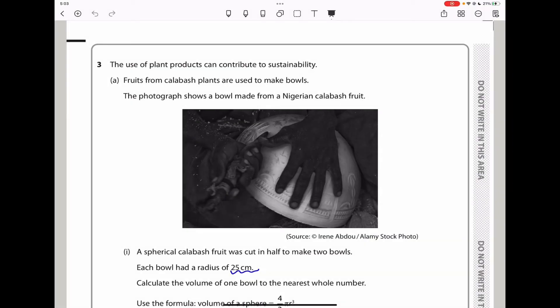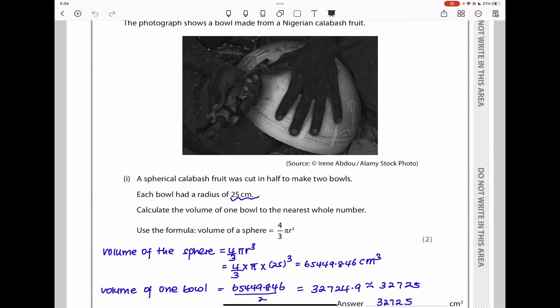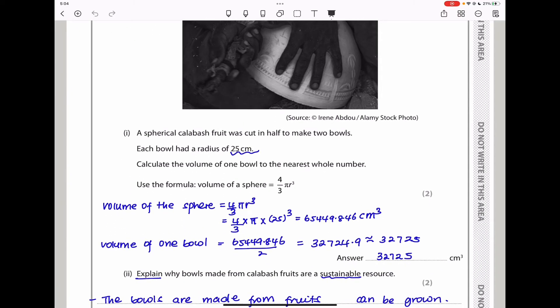Question 3: the use of plant products can contribute to sustainability. Fruits from calabash plants are used to make bowls. The photograph shows a bowl made from a Nigerian calabash fruit. A spherical calabash fruit was cut in half to make two bowls. Each bowl had a radius of 25 centimeters. Calculate the volume of one bowl to the nearest whole number using the formula for volume of a sphere: 4/3 π r³.